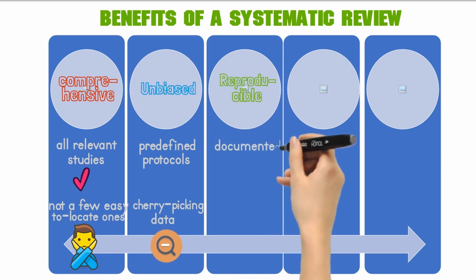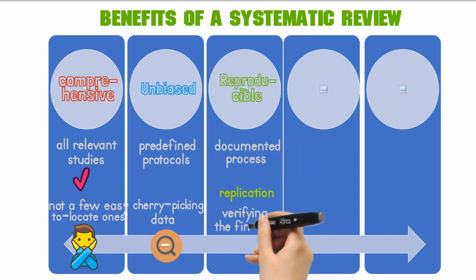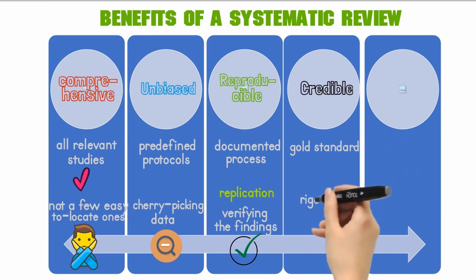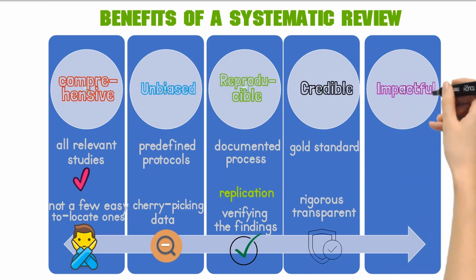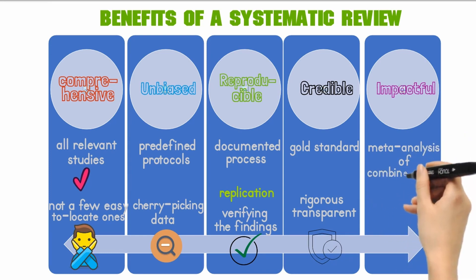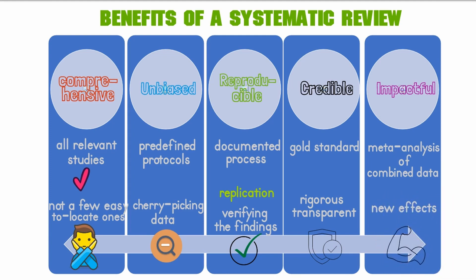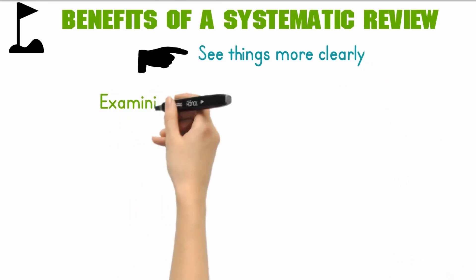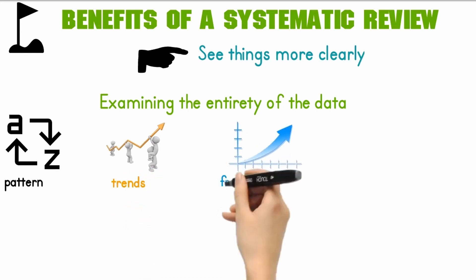Third, it is reproducible — a documented process allows replication if the review is updated, letting you repeat the review and verify the findings. Fourth, it is credible — considered the gold standard due to rigorous, transparent methods. Finally, it is impactful — statistical meta-analysis of combined data reveals new effects not visible in individual studies. To sum up, the main advantage of this approach is that it helps you see things more clearly, identifying patterns, trends, and fresh perspectives you might have overlooked when focusing only on a limited number of studies.